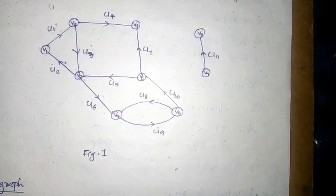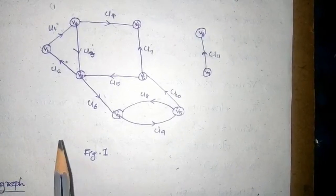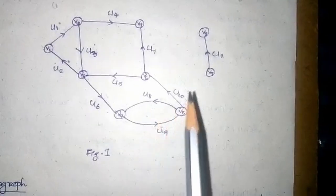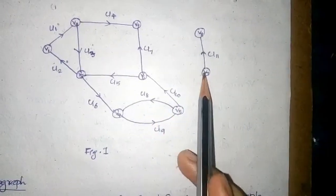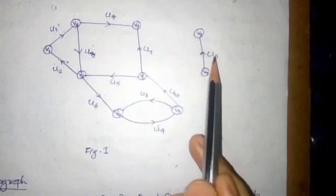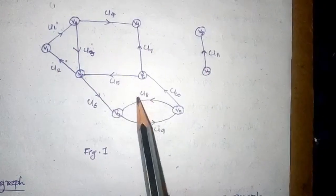For example, consider figure 1. Here the graph has two components: one consisting of vertices V7, V8 and the arc U11, and the other being the remaining portion.